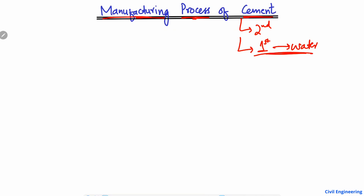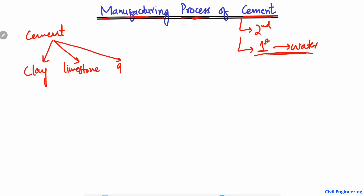First of all, cement is composed of three main elements or materials. Cement is made of clay, limestone, and gypsum. These are the three important materials used in the manufacturing of cement.